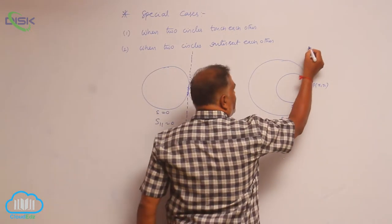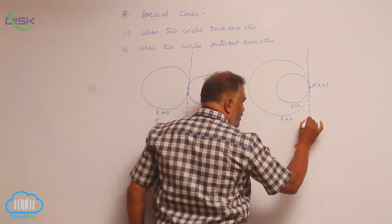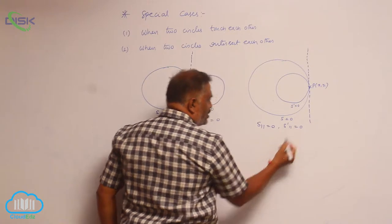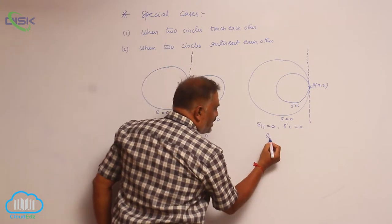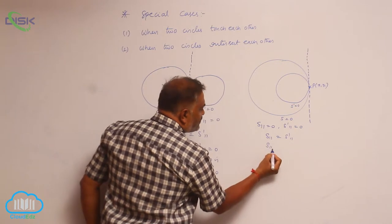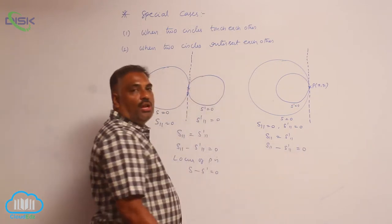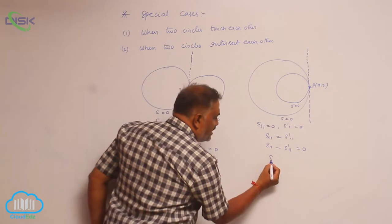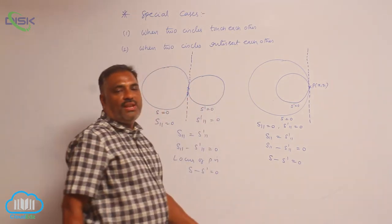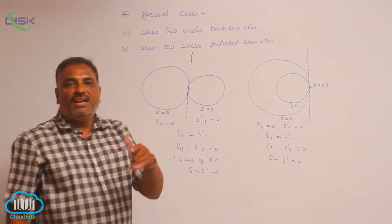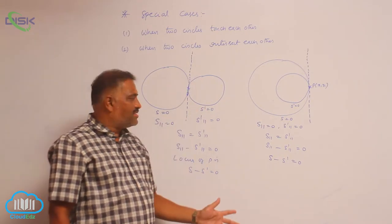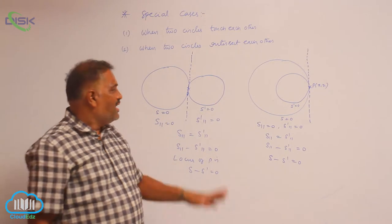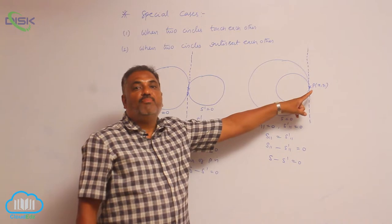Even in the internal case, you get the common tangent similarly. S11 = 0 and S'11 = 0, so S11 = S'11 and S11 − S'11 = 0. The locus of this point is found by replacing 11 with general coordinates: S − S' = 0. Whenever you subtract circle minus circle, you get a straight line — that is nothing but the radical axis. So the radical axis of two circles which touch each other is nothing but the common tangent at the point of contact.